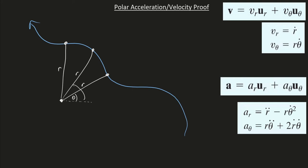As we can see, theta is getting bigger. Here is our radial axis and here is our tangential axis, sometimes written as theta hat or the theta axis. The r axis is positive outwards from our origin, and our theta axis is positive in the direction of increasing theta. So since theta is increasing in this direction, our positive tangential direction is in this direction.